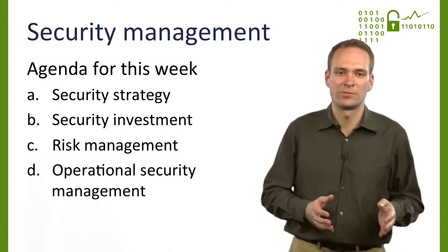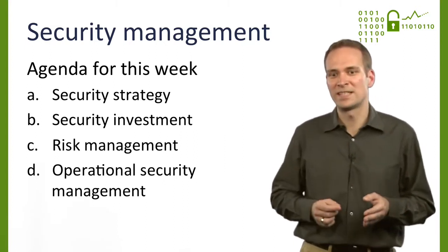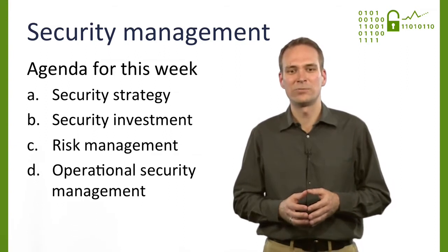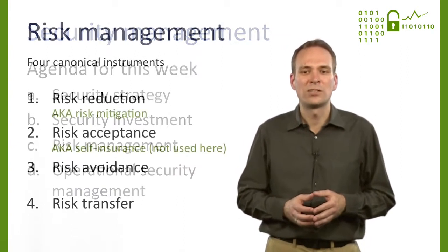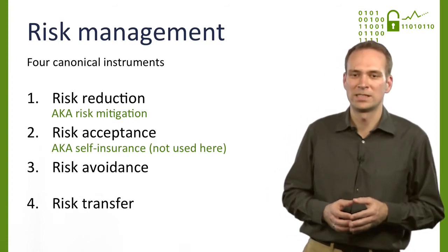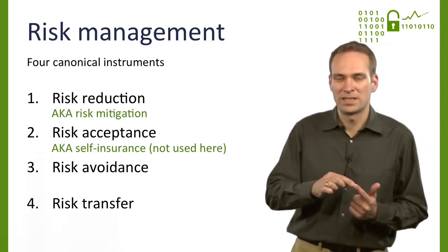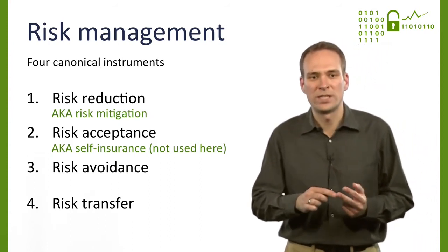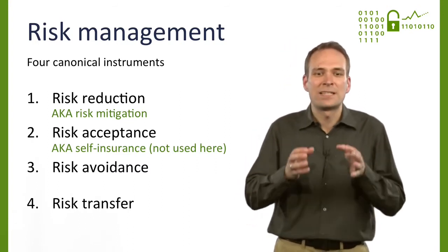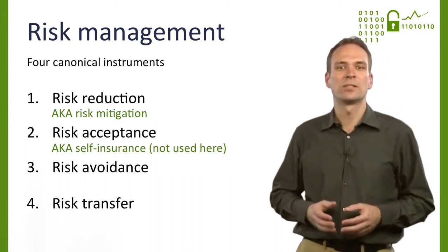Setting money aside for security controls, even if we know how much and exactly what an organization needs, is not the only way of dealing with information security risks. You might recall the four canonical instruments in general risk management: risk reduction or mitigation, risk acceptance, risk avoidance, and risk transfer. Each of them has a specific meaning in risk management, which equally applies to the management of cyber risk.